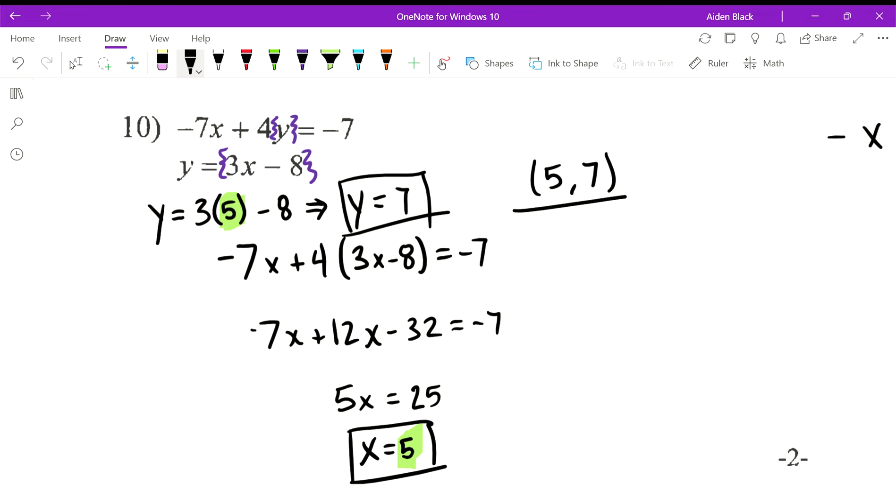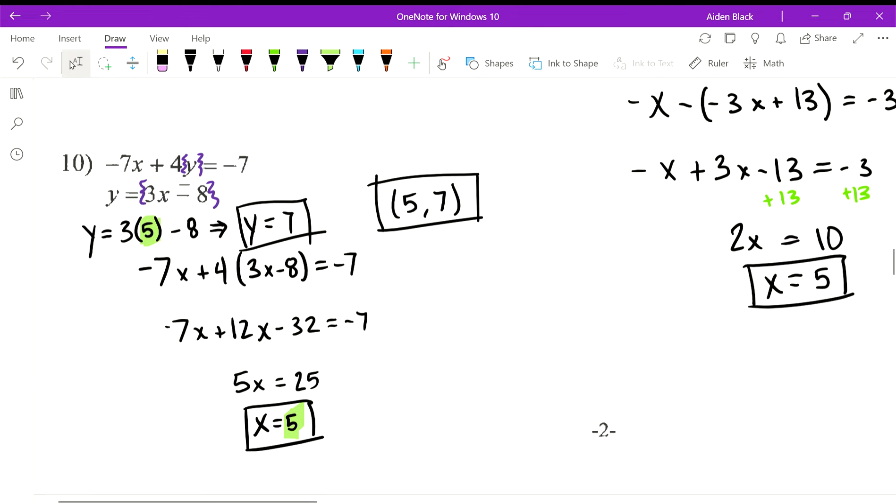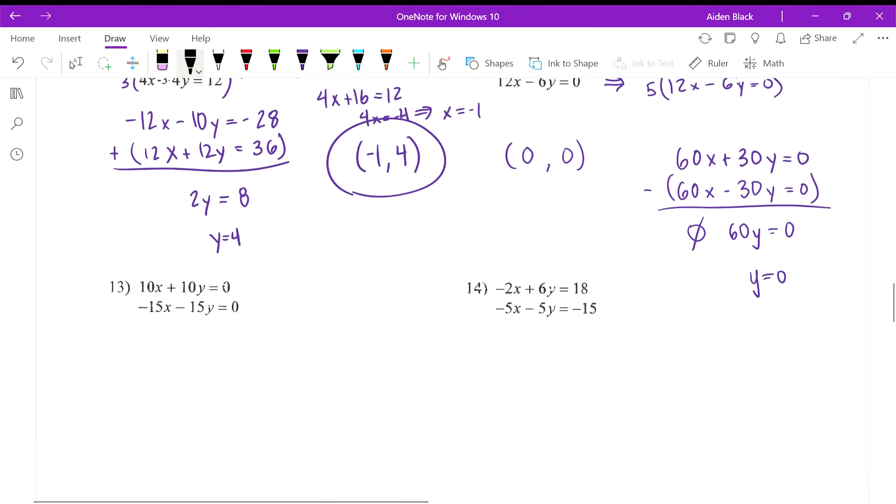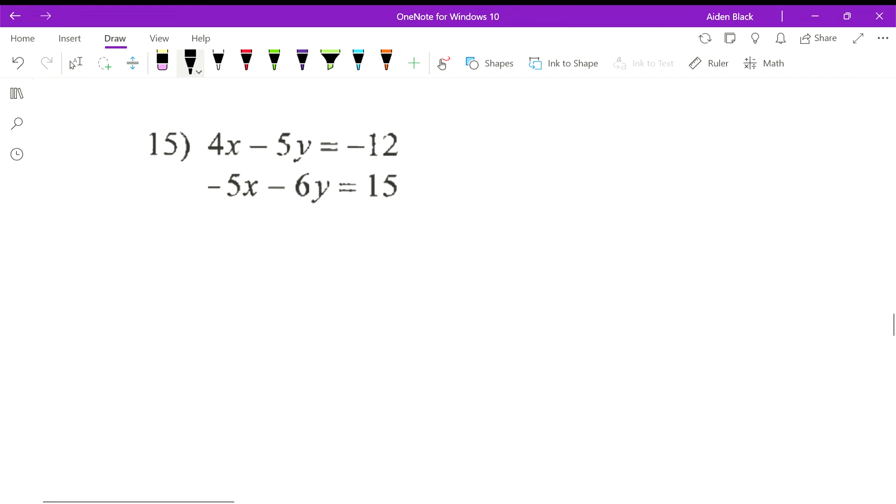So here's our solution, 5 comma 7. And we really need to write our solution as an ordered pair like this. Alright, let's look at elimination. We'll do another one of these.